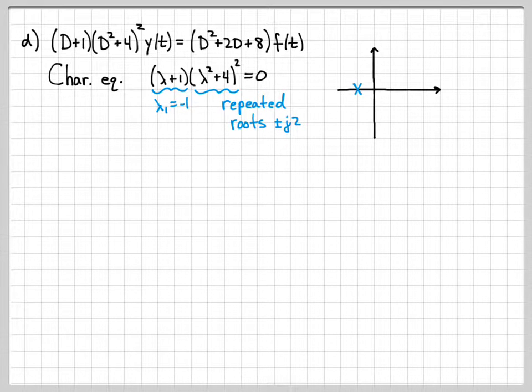So lambda 1 root, I had drawn the same way. When I draw the root at j2, though, I put a little 2 next to it to indicate that this is a second order root. Same thing at minus j2, I write a little 2 next to it to indicate that this is a root of order 2.